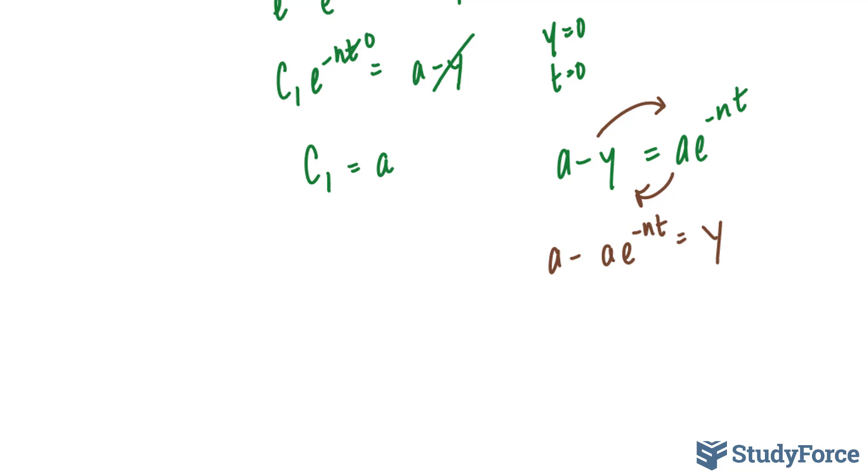And this is where we get our upper limit formula of y is equal to, factoring out an a, bracket 1 minus e to the power of negative nt.